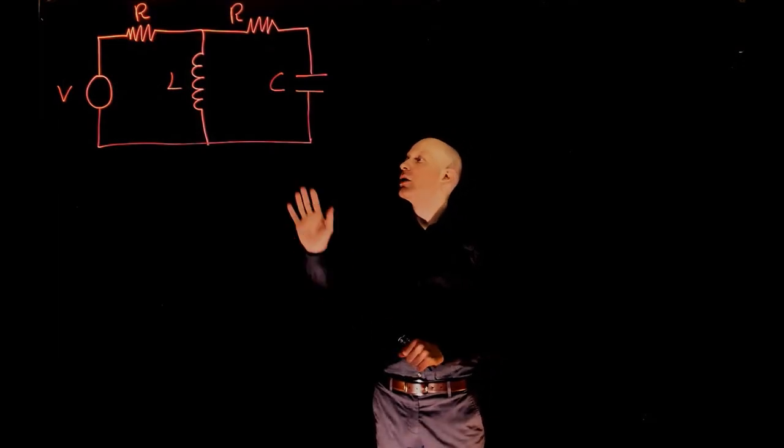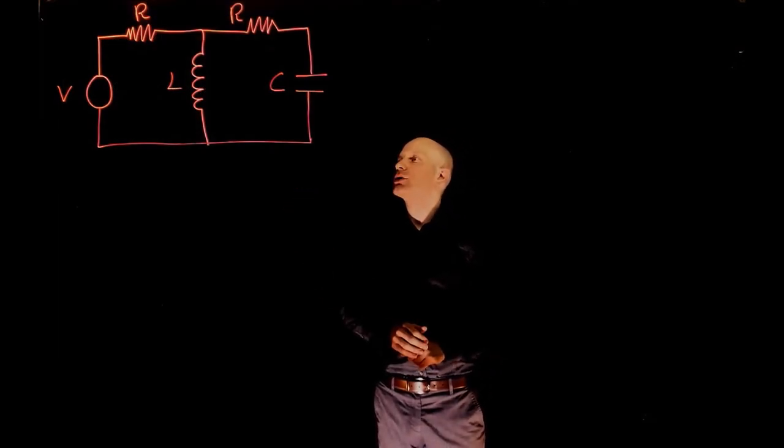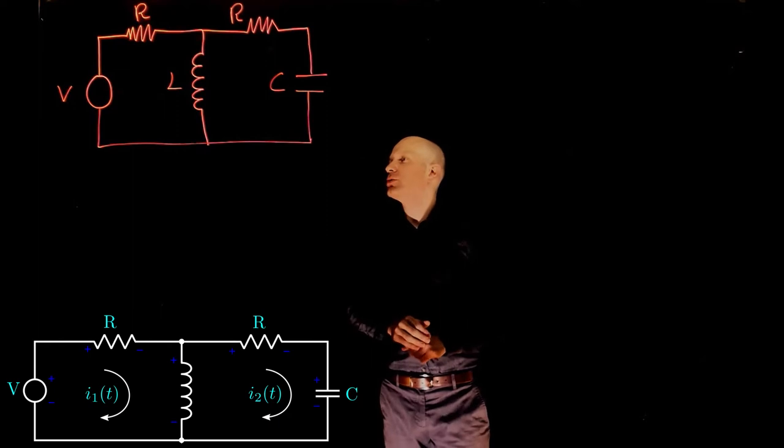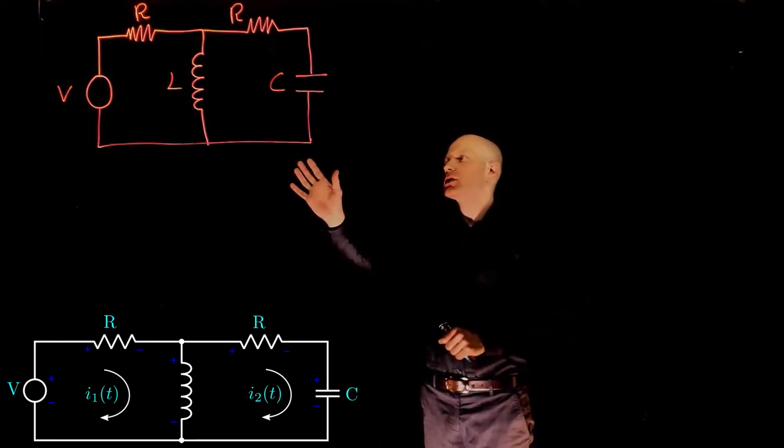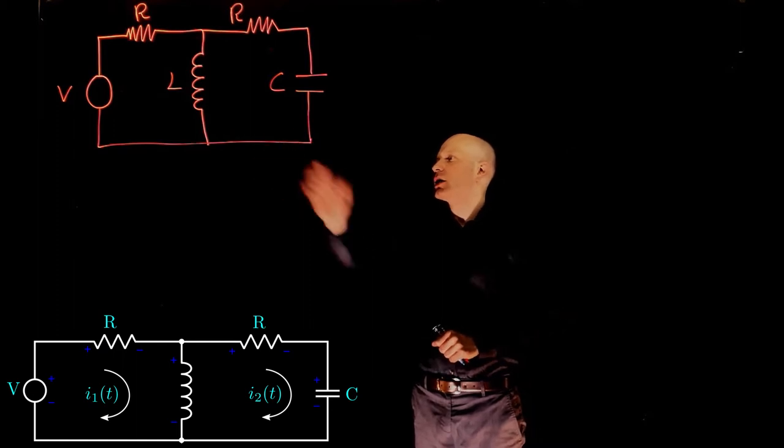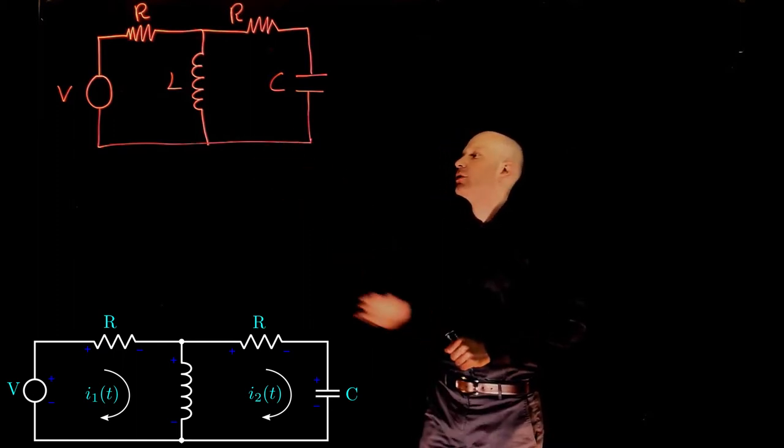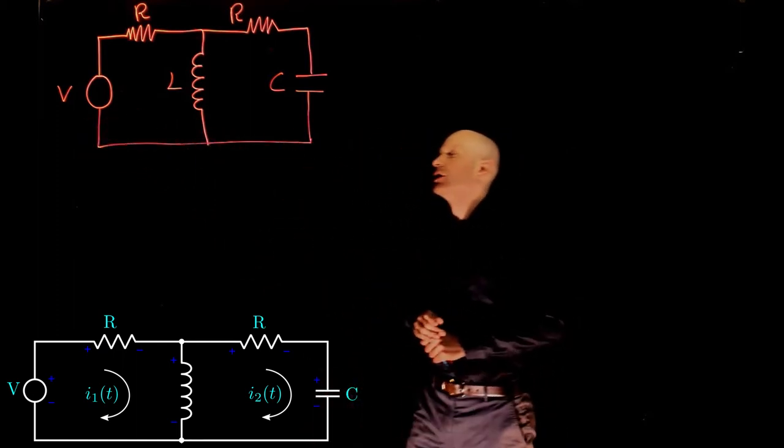In this example, we have an RLC circuit that follows this arrangement, and we are looking for the equations that describe the behavior of this system as a function of the currents and the input voltage that we have here as V.